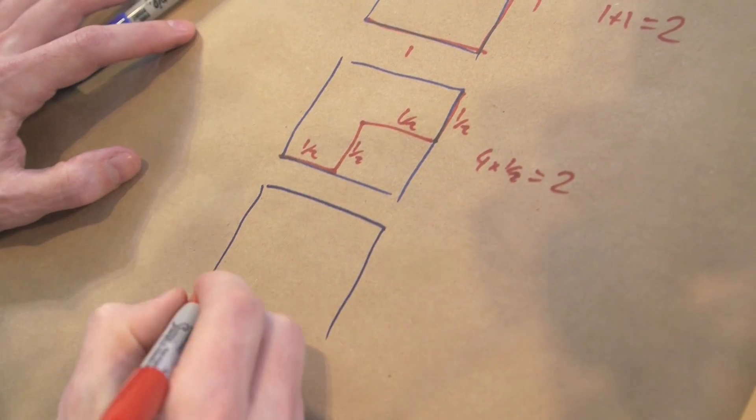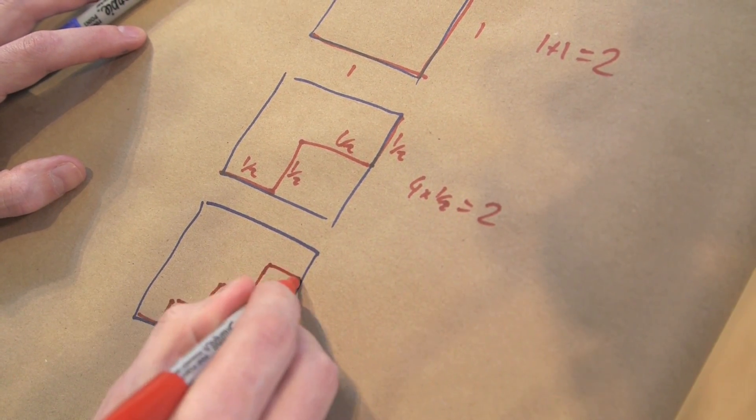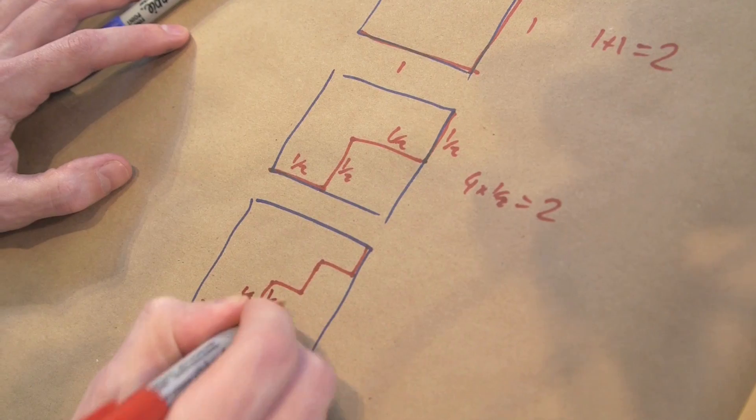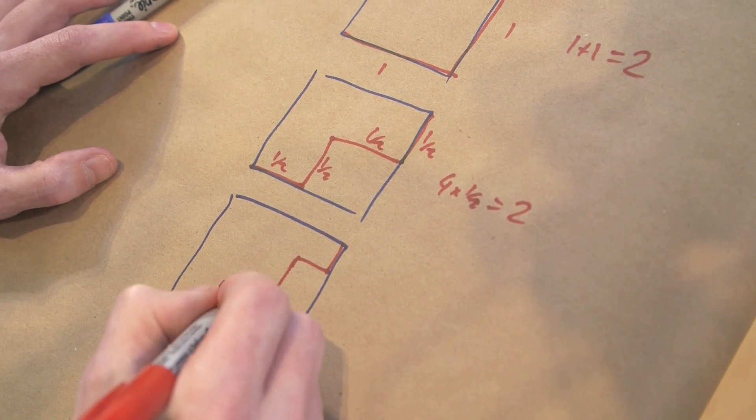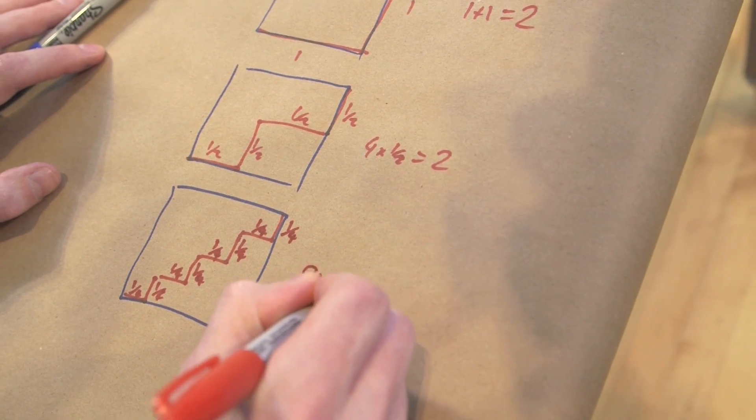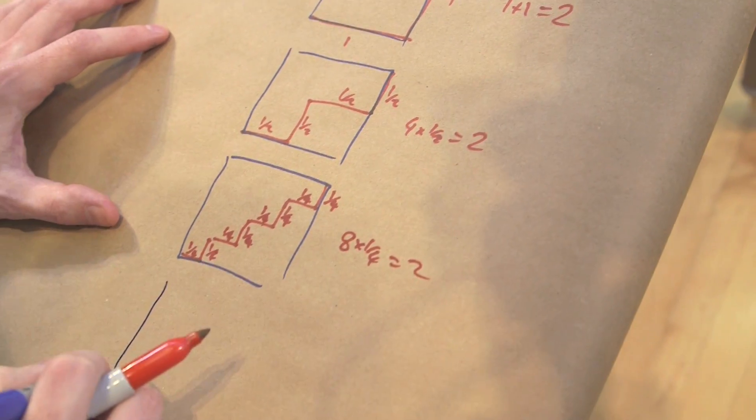So now I'm going to do more steps. There we go. Quarter plus a quarter, plus a quarter, plus a quarter. Because there's 4 across. So there's 8 times a quarter, 8 times a quarter, that's still 2. Well, but I'll get there, I know I will.